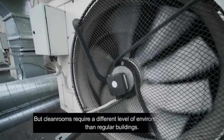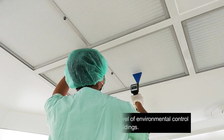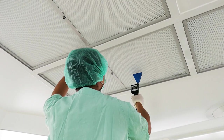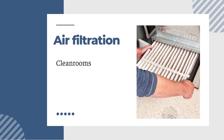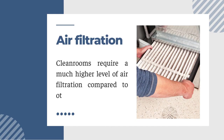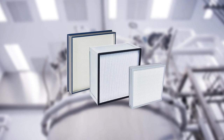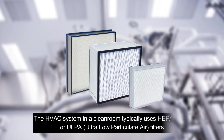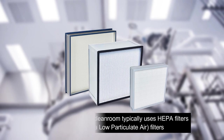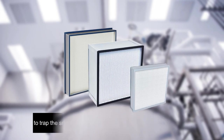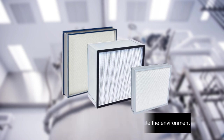But cleanrooms require a different level of environmental control than regular buildings. Here are some of the key differences. Cleanrooms require a much higher level of air filtration compared to other HVAC systems. The HVAC system in a cleanroom typically uses HEPA filters or OPA filters to trap even the smallest particles that can contaminate the environment.